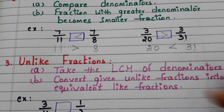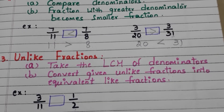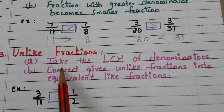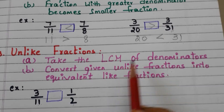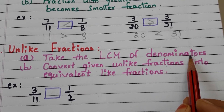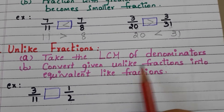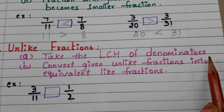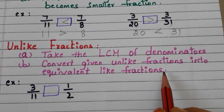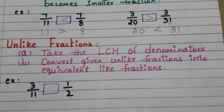Now let us go to unlike fractions. When unlike fractions are to be compared, first we have to take the LCM of the denominators and convert the given unlike fractions into equivalent like fractions. Let us see in the example.